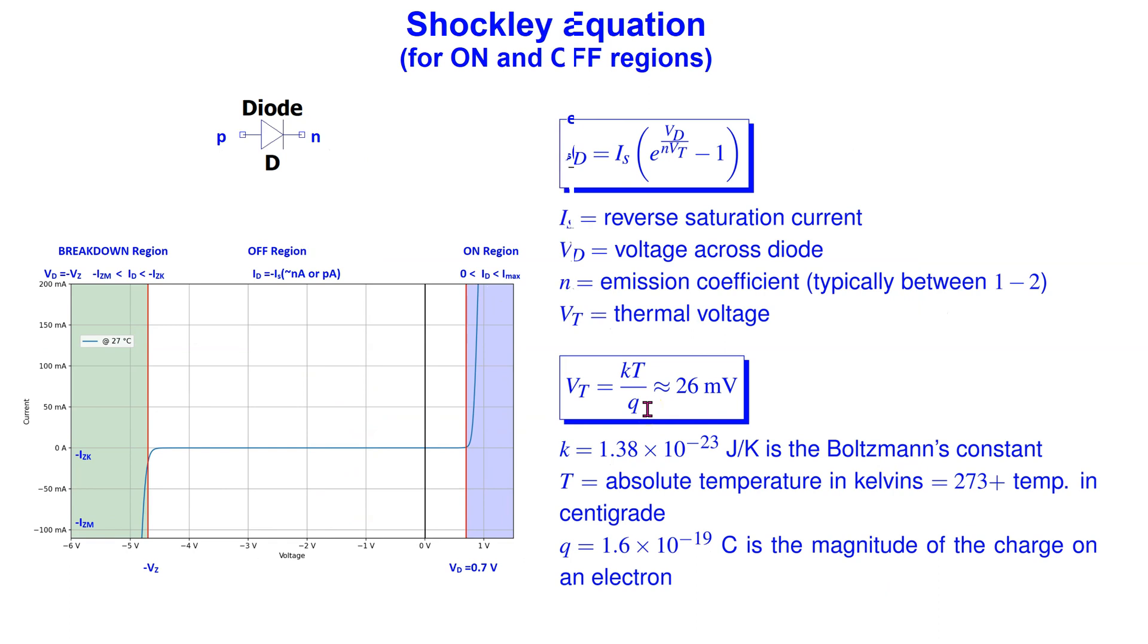In introductory electronics textbooks, the famous Shockley equation is used to mathematically approximate the diode characteristics. This equation was first published in 1949. It relates the diode current to the diode voltage as shown here, where IS is the reverse saturation current.